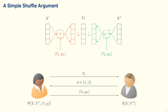This is a Sigma protocol and it is Honest Verifier Zero Knowledge — the simulator is very simple. It is also sound: if V prime is not a shuffle of V, but the prover could prove that it is with probability greater than one-half, then the prover would be able to answer both challenges. That would imply a shuffle from V to V1 and from V1 to V prime, and by perfect re-randomizability that would imply a shuffle from V to V prime — contradicting the fact that they are not in the language.